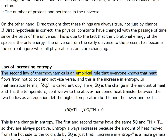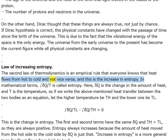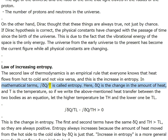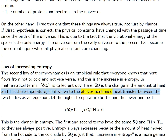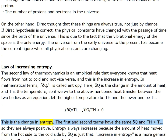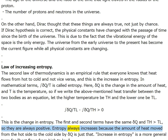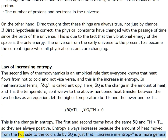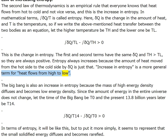The second law of thermodynamics: heat flows from hot to cold and not vice versa — this is the increase in entropy. In mathematical terms, ∫δQ/T is called entropy, where δQ is the change in heat and T is the temperature. Writing heat transfer between two bodies as an equation with higher temperature Th and lower temperature Tl: ∫δQ/Tl − ∫δQ/Th ≥ 0. Entropy always increases because the amount of heat moved from hot to cold by δQ is just that — entropy increase is heat flowing from high to low.